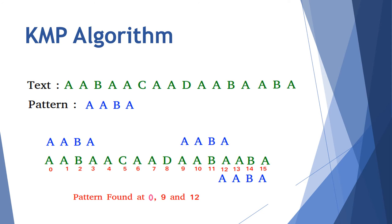KMP algorithm: the text and pattern are given. The text is represented with index values from 0 to 15. The search pattern is A A B A. It checks from index 0 to 3 — the search is found. It moves forward; at index 9 to 12 the search is found again. At index 12 to 15 the search pattern is also found. So the search pattern is found at index values 0, 9, and 12 — totally three times.